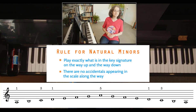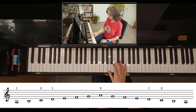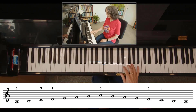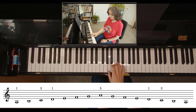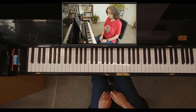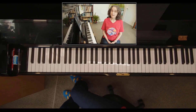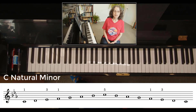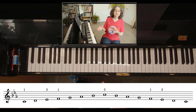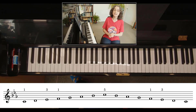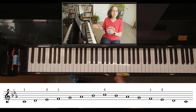Let's have a listen. And just to compare, here's C natural minor. I chose this key because it's got three flats in the key signature: B flat, E flat, A flat. So when we play C natural minor, we'd be playing those three notes because they're in the key signature — we'd include those flats — but there are no accidentals along the way. There's no change to what's in the key signature.